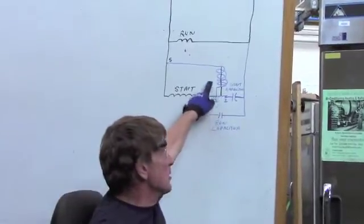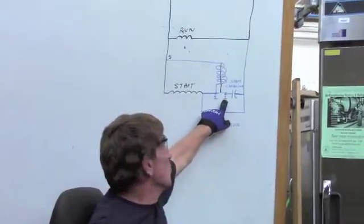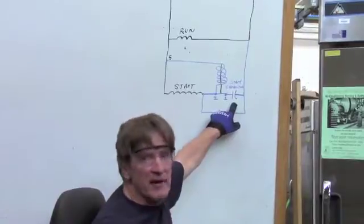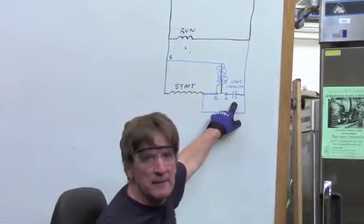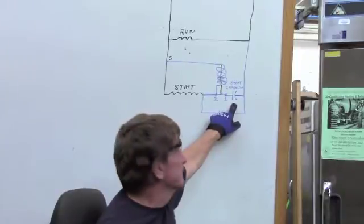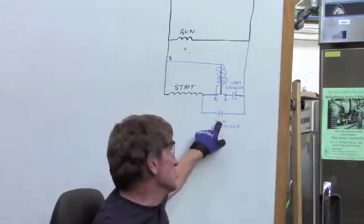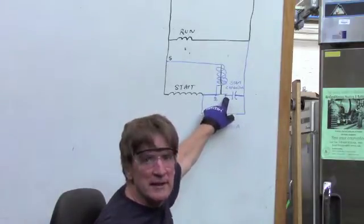And this is our potential relay. The potential relay has three sets of points. Number one, which is to our starting capacitor. Starting capacitors range in 100 microfarad or higher, and they're generally made out of ceramic. I have a run capacitor, which is usually made of metal, and these two capacitors are actually in parallel when this circuit is engaged.